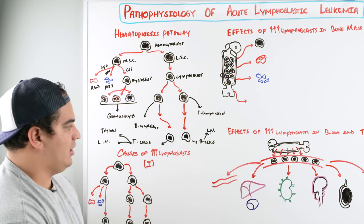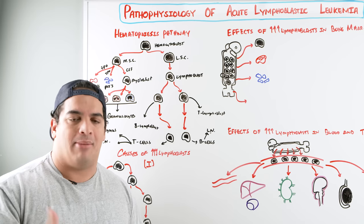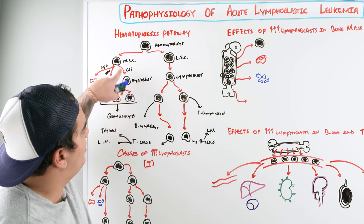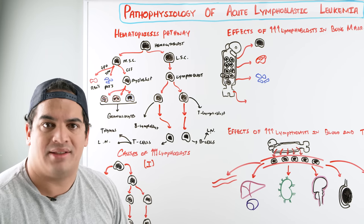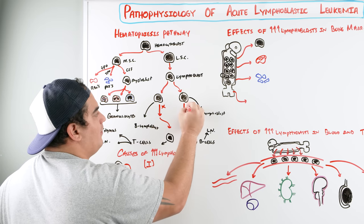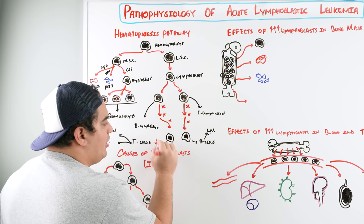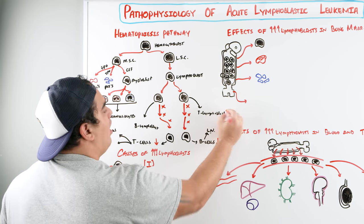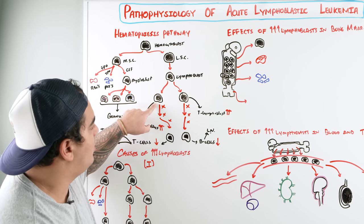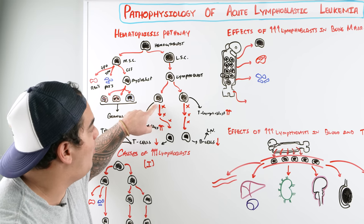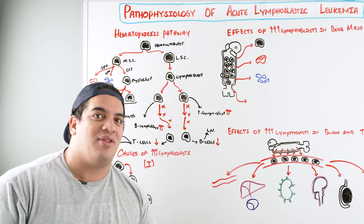The problem in ALL is a breakdown in hematopoiesis. Similar to AML, the lymphoblasts become B lymphoblasts and T lymphoblasts but get stuck — they cannot further differentiate into functional T cells and B cells. This results in decreased functional B and T cells and a massive accumulation of lymphoblasts that continue to replicate without fully maturing.